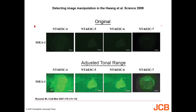Here you're seeing the original images that were submitted to the journal Science, and down below the adjusted tonal range of those same images. This was in the supplemental section of the Science paper. What you can see is that those two middle figures are actually identical, and this was shown to be scientific misconduct. When they went back and looked at other figures, there was image manipulation in many of them.